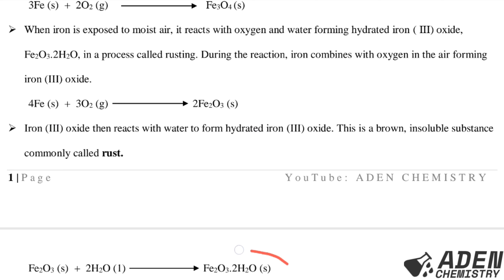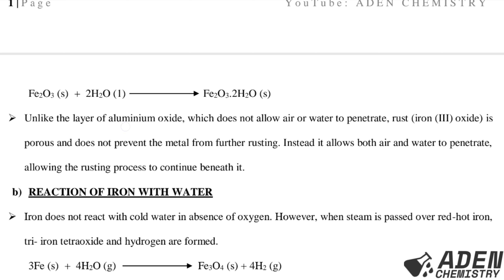Unlike the layer of aluminum oxide, which does not allow air or water to penetrate, rust (iron(III) oxide) is porous and does not prevent the metal from further rusting. It allows both air and water to penetrate, allowing the rusting process to continue beneath it. Aluminum oxide prevents further reaction from occurring, but iron(III) oxide does not — it allows rusting to continue beneath it.